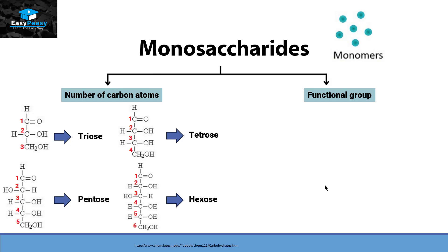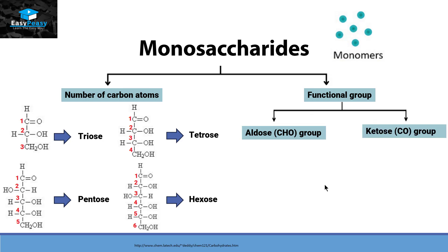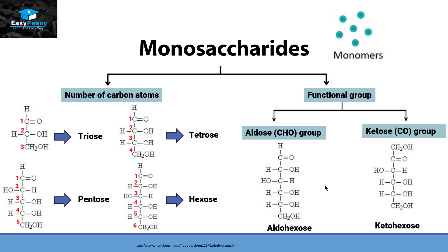If we talk about functional group, we have two different categories. One is the aldose, having a functional group of CHO, and the second is ketose, which has the C=O group. Right now we have two hexoses here — one is the aldohexose and one is the ketohexose — and in both cases we have six carbon atoms, which is why they are called hexose.